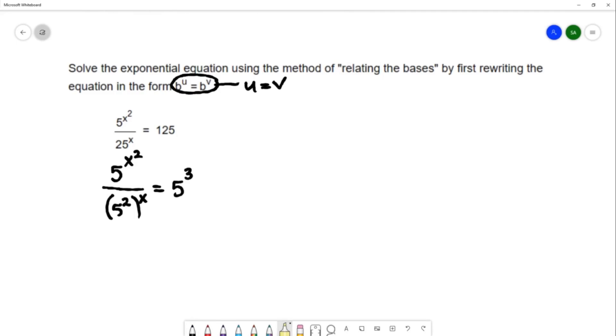I'm going to use a property of exponents to simplify. The property that I'm going to use is called the power rule for exponents. The power rule for exponents deals with the situation where you have a base to a power and then that whole expression is raised to a power.